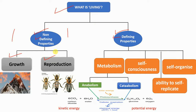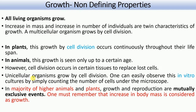Why are growth and reproduction non-defining properties? Consider this mountain — it is also showing growth. For example, a small mountain increases in height over time, so mountains also show growth. And there are some animals who are not able to reproduce themselves. So on the basis of reproduction we cannot conclude something is not a living thing, and on the basis of growth we cannot conclude something is a living thing. All living organisms grow — in plants, cell division takes place; in animals also they are growing; in unicellular and multicellular organisms alike.